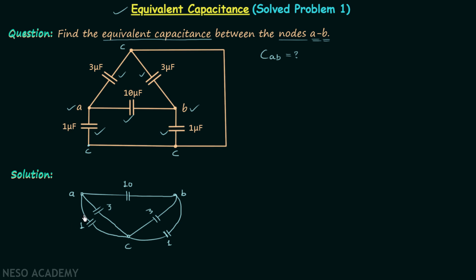It is now clear that the two capacitors between A and C are in parallel, and the two capacitors between C and B are also in parallel. In a parallel connection, capacitance values are added. So 1 plus 3 gives us 4µF on the A-to-C branch, and 1 plus 3 equals 4µF on the C-to-B branch.